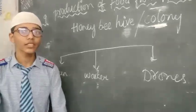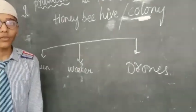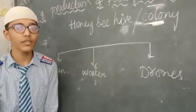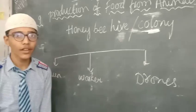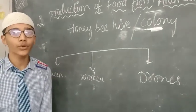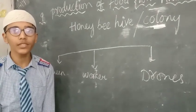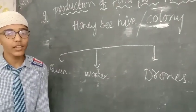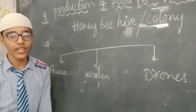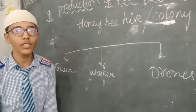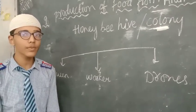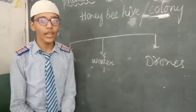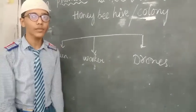The worker bees are the sterile females. These worker bees tend to inner duties during the first three weeks, like secretion of royal jelly. After three weeks, these bees attend to outer duties like collecting nectar from the flowers.